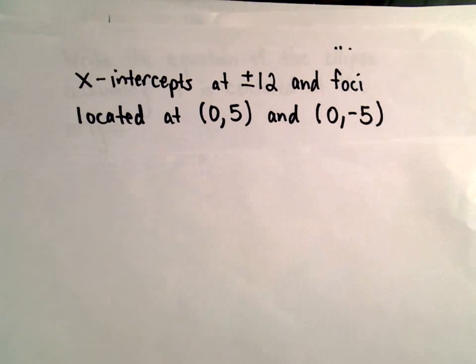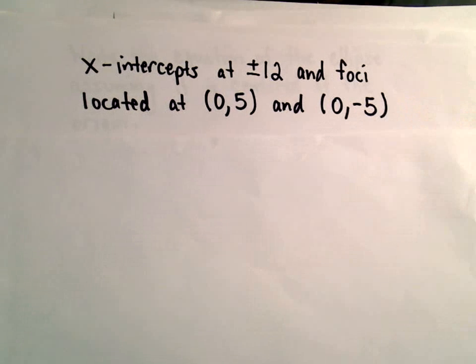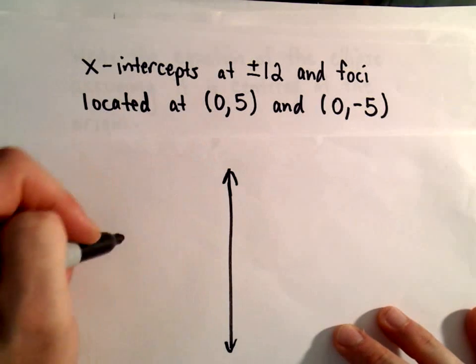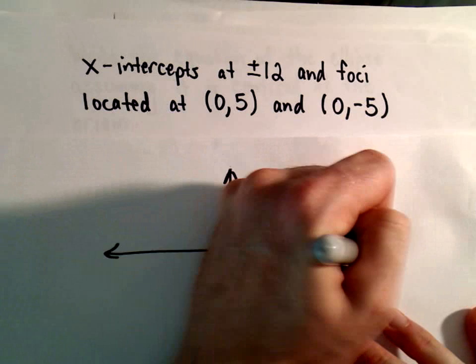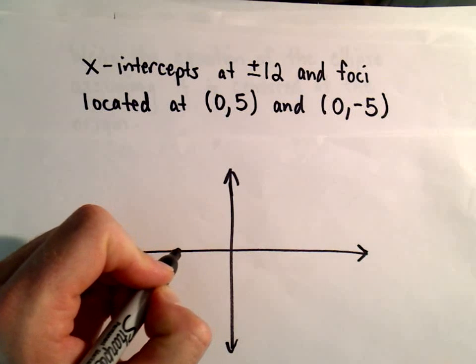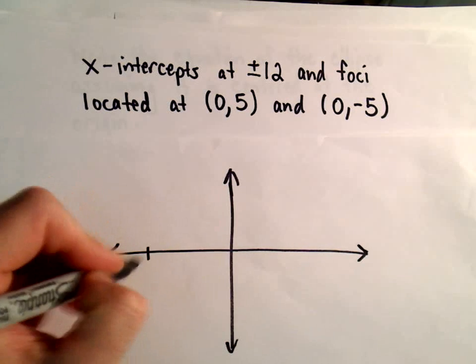So I'm gonna make a little sketch just to help me. Very rough because the point is not to really sketch it, but to come up with the equation. So I know the x-intercepts are at positive 12 and negative 12, so I'll stick those somewhere at random. There's negative 12 and positive 12.